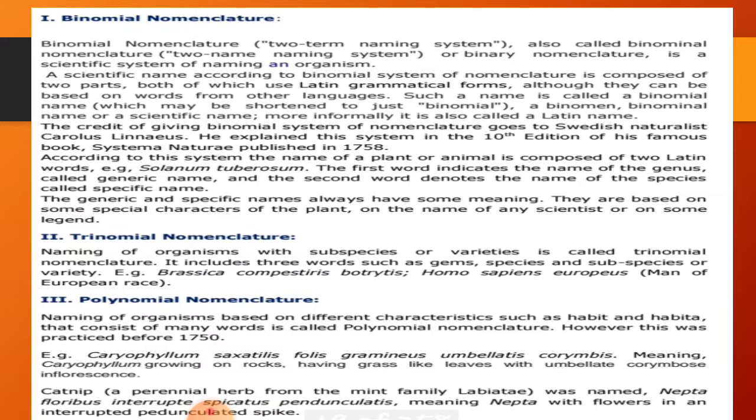Examples of the old polynomial nomenclature include long descriptive names such as Caryophyllum, with terms like graminous, amultious, and corumbus used to describe characteristics — growing with arrow-shaped leaves, gross like leaves. These long descriptive names are what we call polynomial nomenclature. This is the old system that preceded binomial nomenclature.